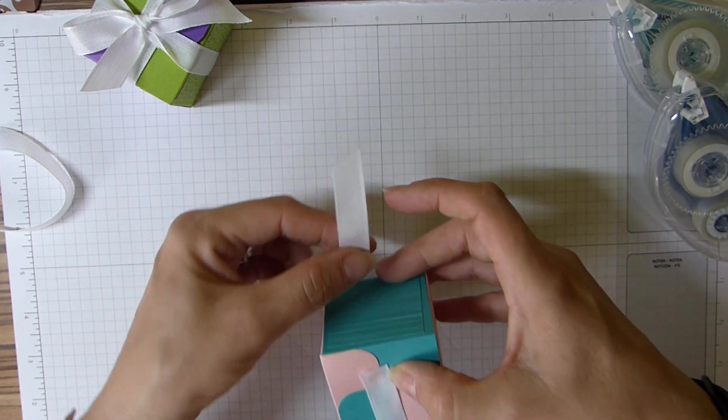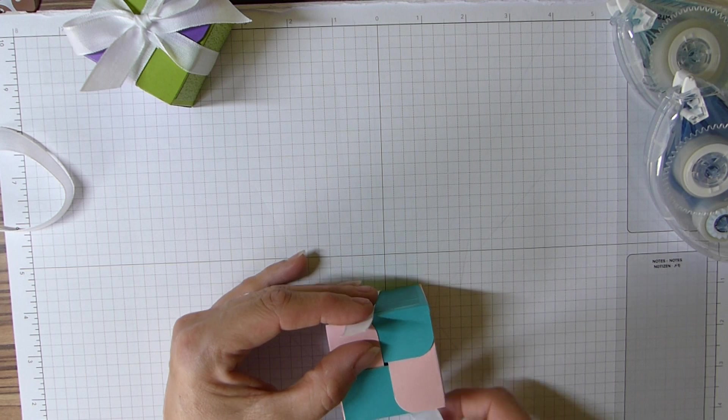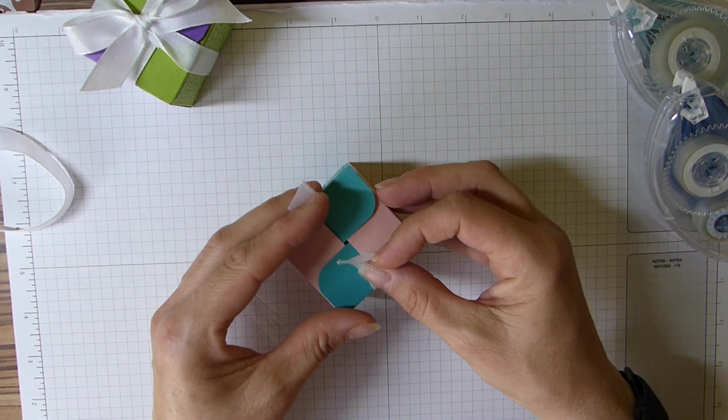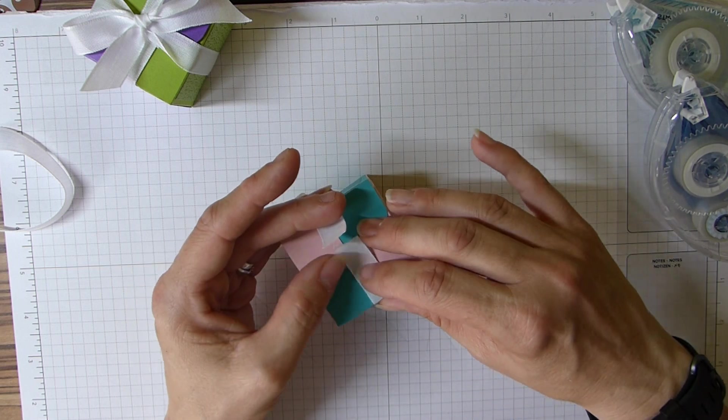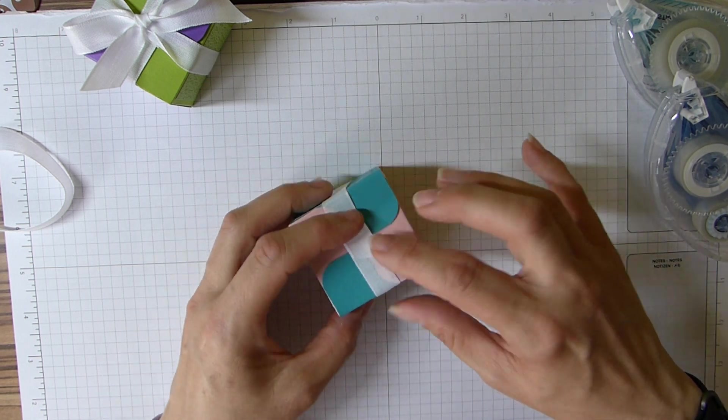Wrap it around making sure it's not twisted, or sticking to your grid paper. And then just obviously make sure it's lined up and press it together.